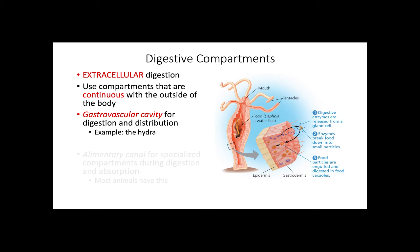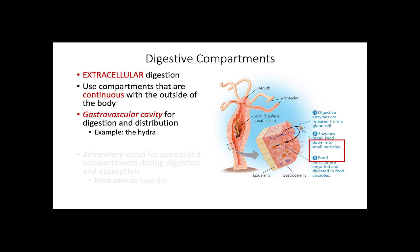In terms of extracellular digestion, animals have compartments that are continuous with the outside of the body. Some animals like the carnivorous hydra possess a gastrovascular cavity, used for digestion and distribution of nutrients. The gastrovascular cavity is lined with specialized cells forming a gastrodermis, which releases digestive enzymes. These enzymes break down food into small particles, and food vacuoles then engulf digestive particles back into the cells.